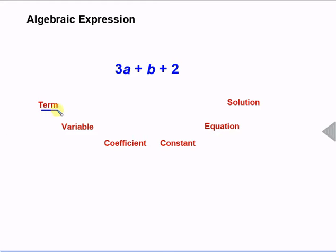One thing that we have in an algebraic expression is called a term. And a term is just a combination of number and variable or just a variable or just a number that is separated by an operator like a plus sign or a minus sign. And there are different kinds of terms.